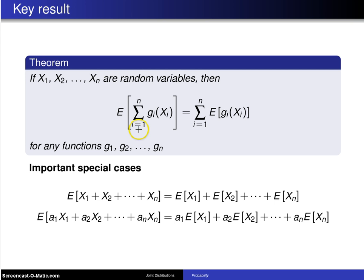Then the expected value of the sum from i equals 1 to n of g sub i of x sub i is equal to the sum from i equals 1 to n of the expected value of g sub i of x sub i for any functions g1, g2 up to gn.